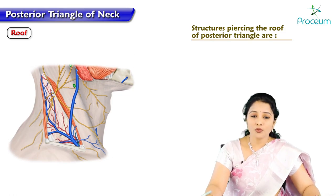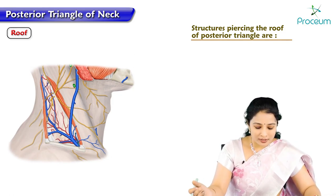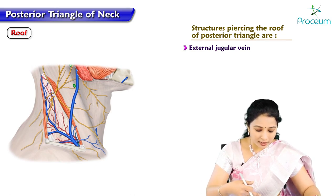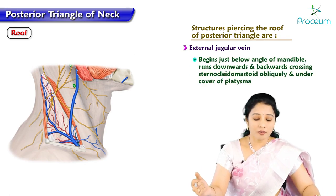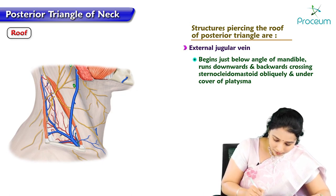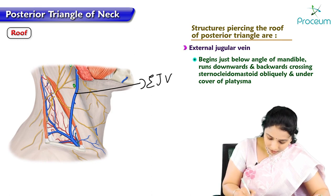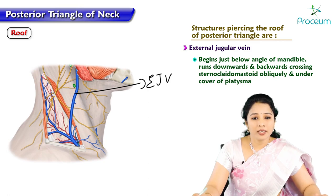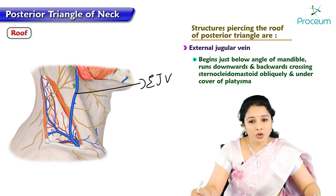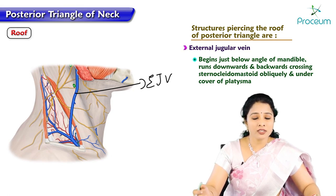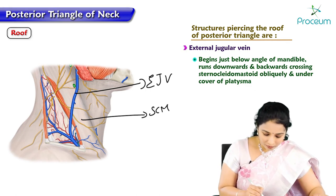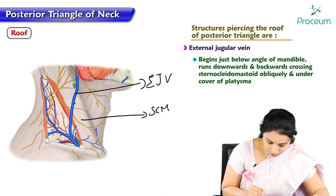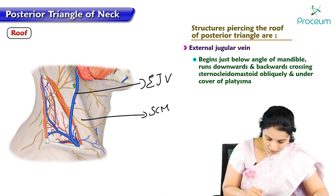The structures piercing the roof of the posterior triangle include the external jugular vein. The external jugular vein pierces the deep fascia to become superficial. It begins just below the angle of the mandible, runs downwards and posteriorly, crossing the sternocleidomastoid obliquely under the cover of platysma, and finally drains into the subclavian vein.